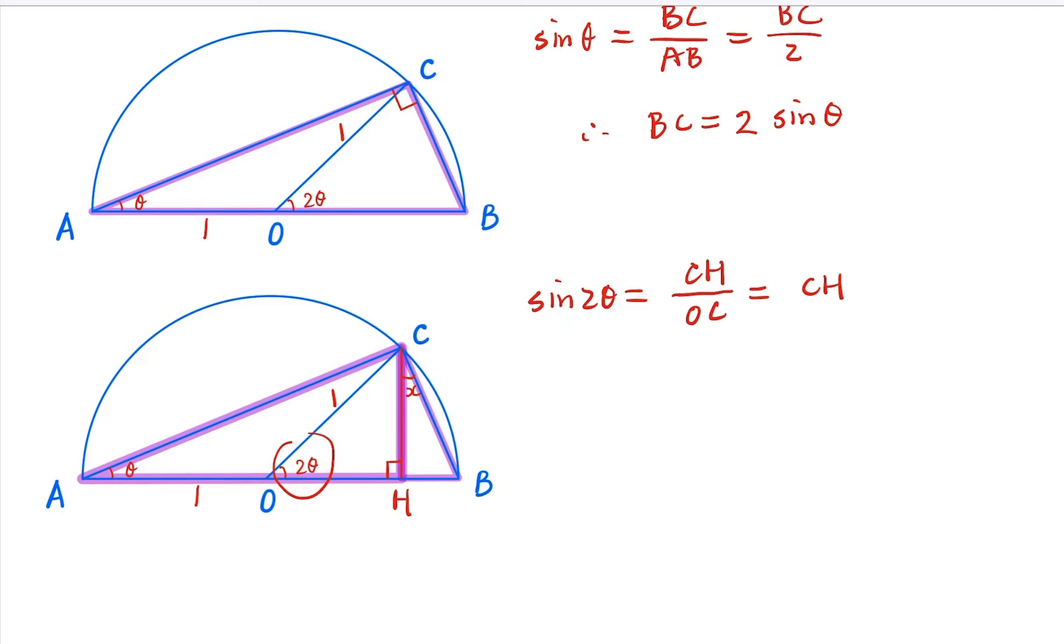Now, here we want to show something. The angle X here, we claim that X equals θ, because X plus angle B here is going to be 90 degrees.